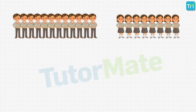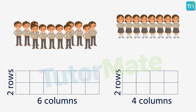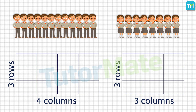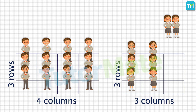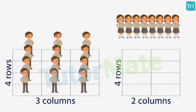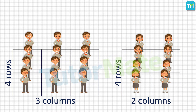If we arrange all of them in 2 rows, we'll have 6 columns of boys and 4 columns of girls, giving a total of 10 columns. Can we arrange them in 3 rows? We can't, because the 8 girls would have 2 columns of 3 (totaling 6 girls) with 2 girls left over in a different column — so the condition of equal rows wouldn't be met. Let's try 4 rows each: the 12 boys divide into 3 columns and the 8 girls divide into 2 columns.